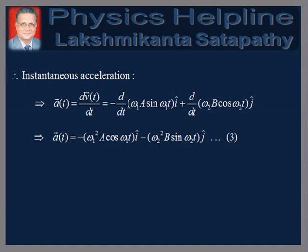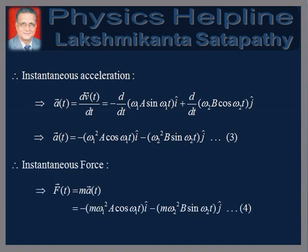Differentiating velocity with respect to time gives the instantaneous acceleration A(T) equals minus ω₁²A cos(ω₁T) î minus ω₂²B sin(ω₂T) ĵ. The instantaneous force is obtained by multiplying acceleration by mass, giving F(T) equals minus mω₁²A cos(ω₁T) î minus mω₂²B sin(ω₂T) ĵ.